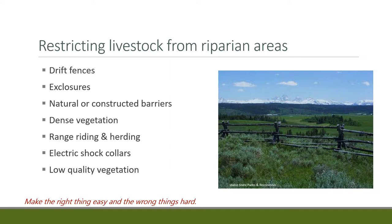If a management technique allows shrubs in the riparian area to grow up and become dense, animals will often avoid or at least not use it extensively. Herd riding — having a rider move animals out of the riparian area and up to uplands — is also effective. New technology suggests using shock collars similar to pet containment systems, where electronic collars turn animals back when they approach a perimeter. These technologies are being developed for livestock and could be quite effective in the future.